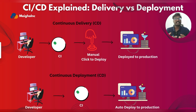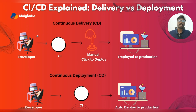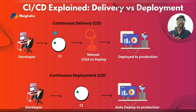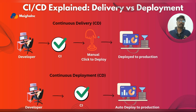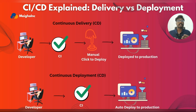In continuous delivery, a developer writes code — think of it as a chef making a pizza. The code is pushed to a repository like GitHub, then CI triggers and runs tests, checking if everything is ready and safe to deliver. Once tested, the code doesn't go live immediately because someone needs to click a button to deploy it — like a restaurant calling you to ask 'should we send your pizza now?' Once that manual step is done, the code is deployed to production and available for users.